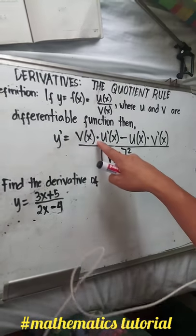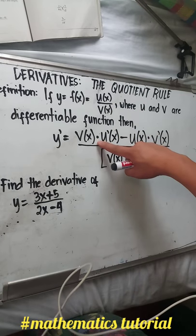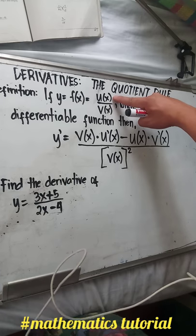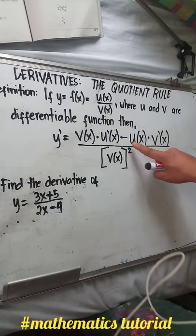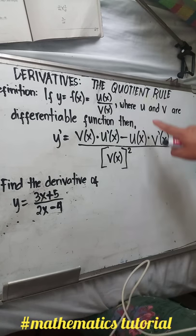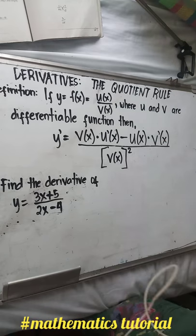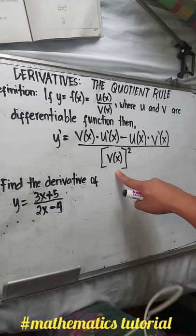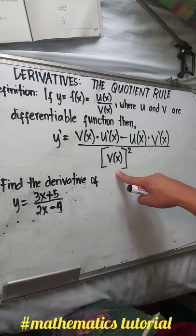v of x — that is the value of the denominator — times the derivative of the numerator, subtract u of x — that is the value of the numerator — times the derivative of the denominator, all over the square of the given denominator. The given denominator is squared.